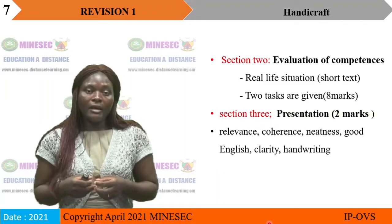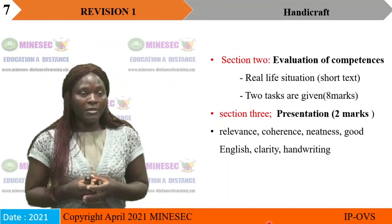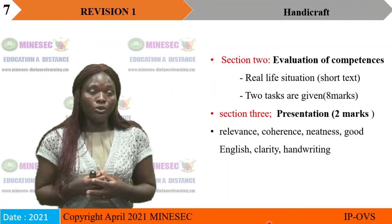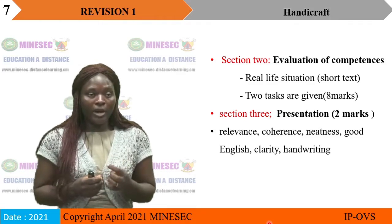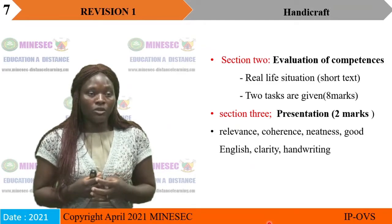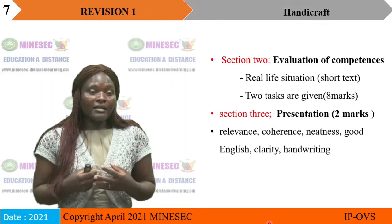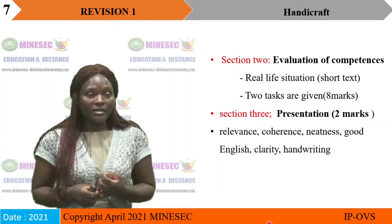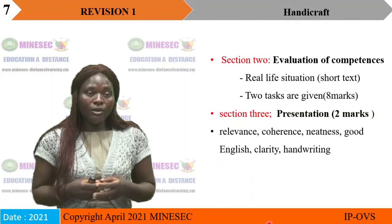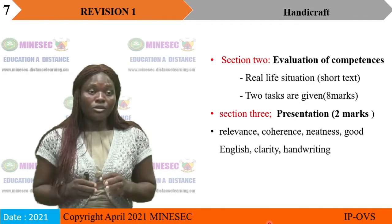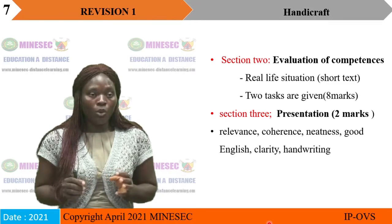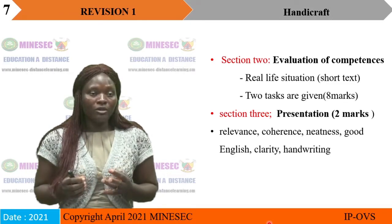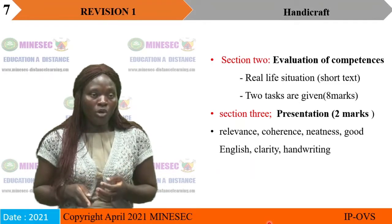Section three is mainly for the examiners, but it is important for learners to know this. Section three is 10% of the exam and carries two marks. The examiner looks at relevance, coherence, neatness, good English, clarity, and handwriting. Students, when writing this exam, you should write well, express yourself well in good English, ensure good handwriting, write clearly, and be coherent in whatever you are writing.